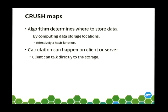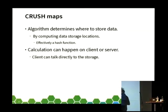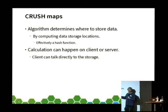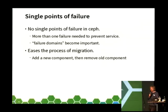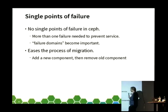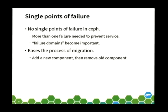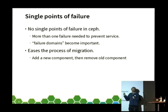Because we can calculate where the data is, we don't need this single point of failure or replicate this area, and this also brings lots of other benefits. It's effectively a hash function — I assume everyone in the room knows what a hash function is. On the topic of no single point of failure, we can actually have more than one node fail. We can define failure domains, and this has an extra utility because it means we can migrate services to new nodes much more easily.